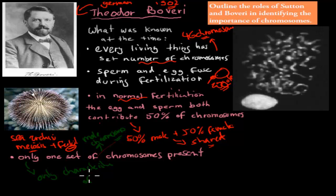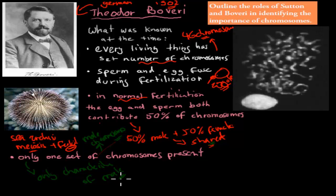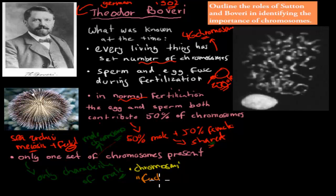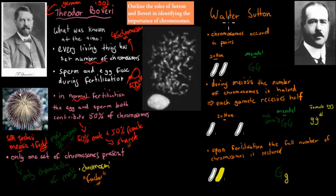This was important because it showed that when both female and male contribute chromosomes, there are shared characteristics. But when only the male chromosomes are present, the offspring resembles only the male. This gave the idea that chromosomes were somehow related to inheritance — beforehand, Mendel had just called them factors. Boveri established that there might be more to chromosomes, and that they were linked to Mendel's factors.